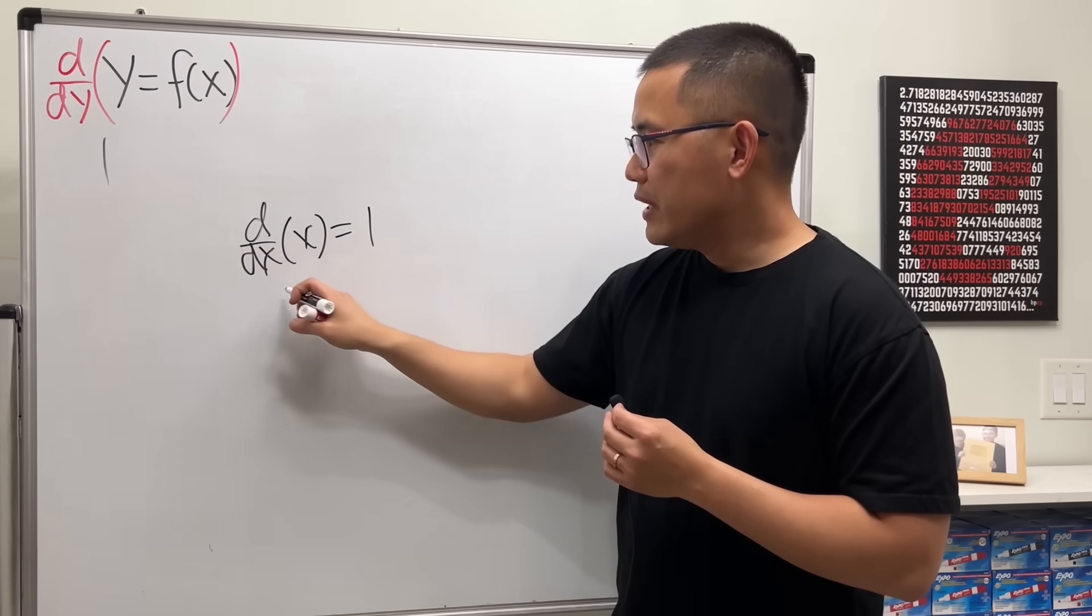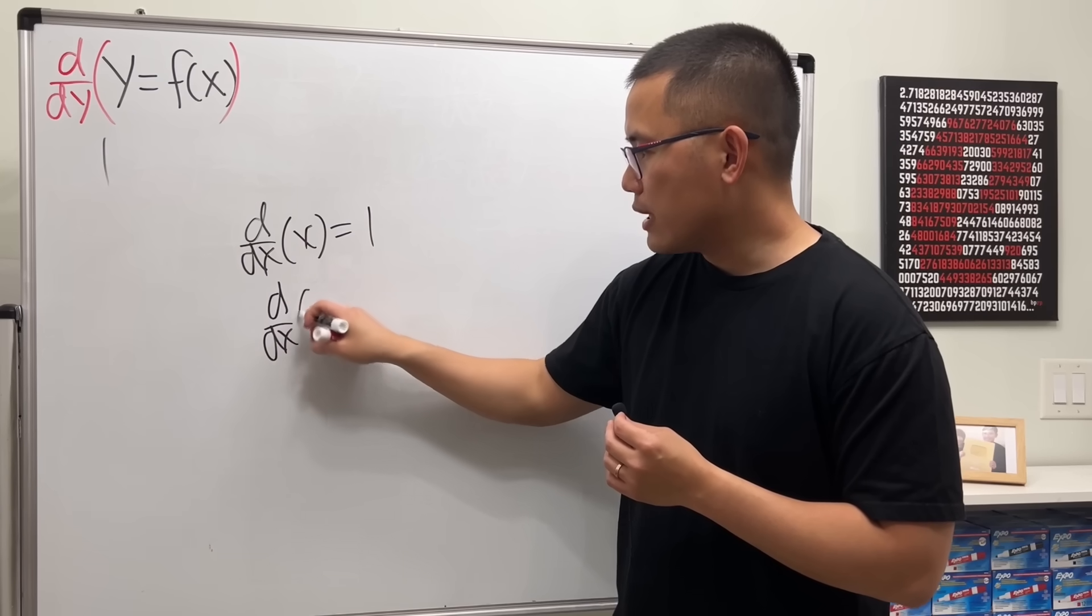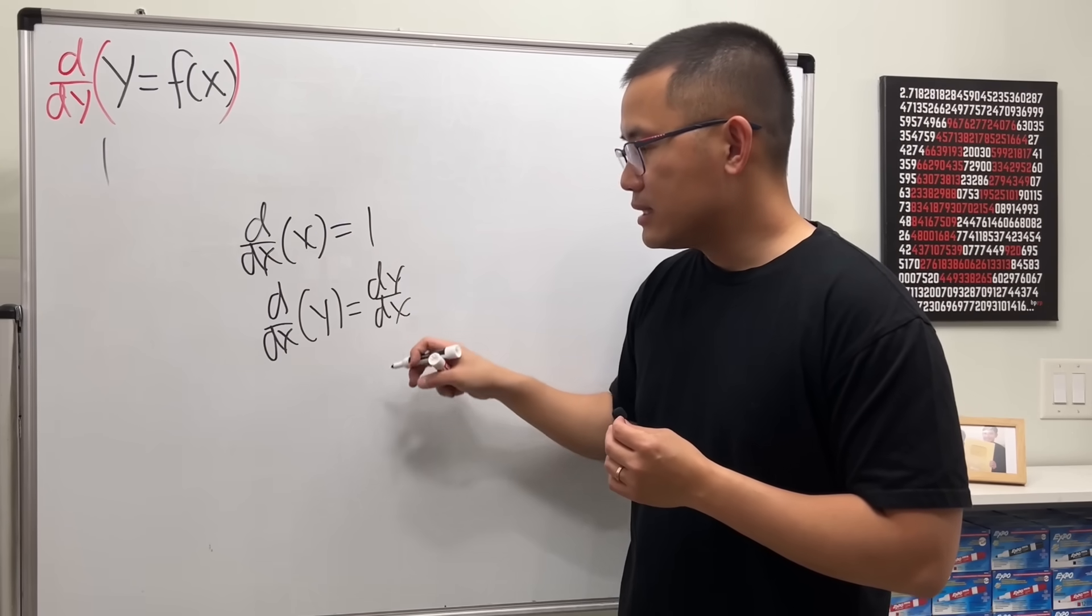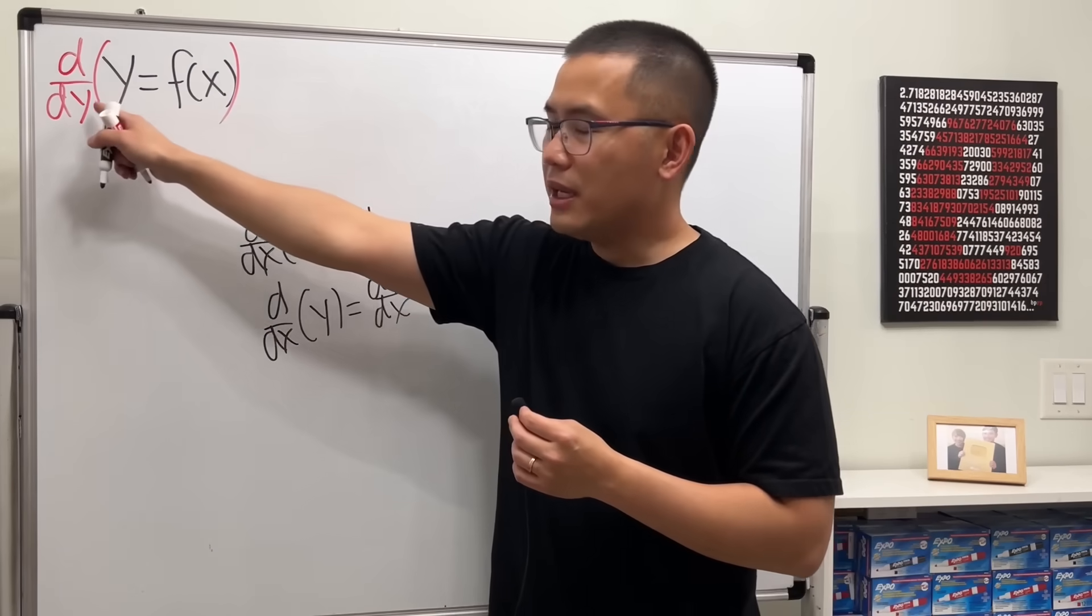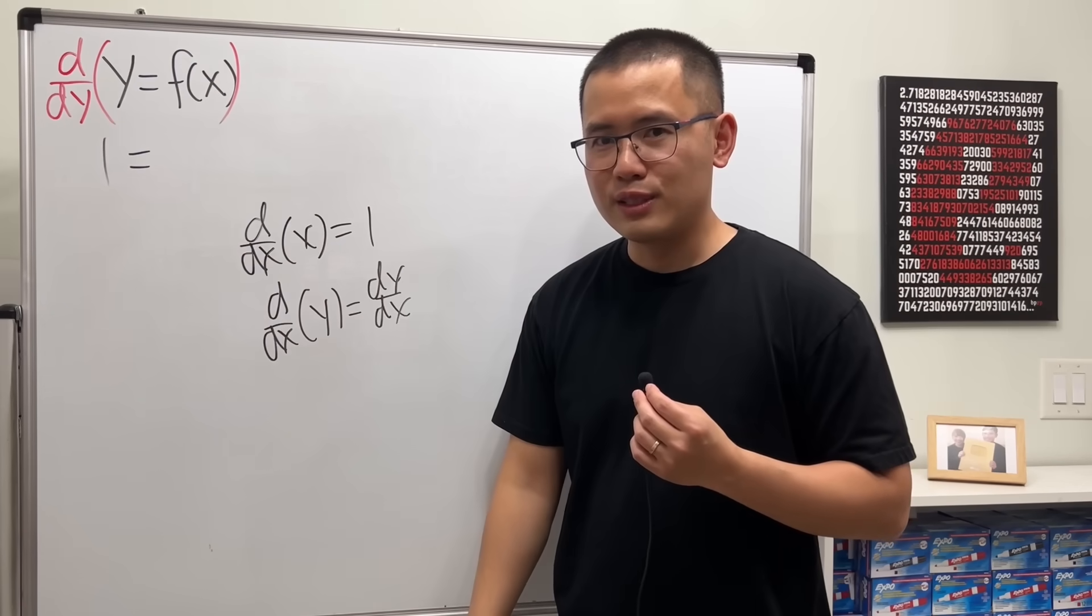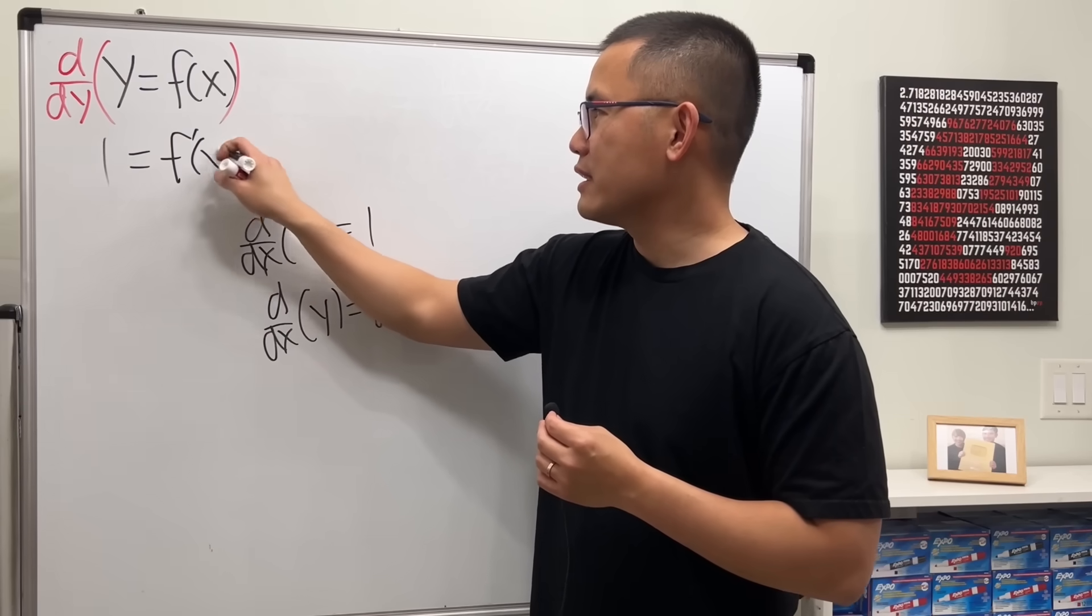If you differentiate with respect to x of y, this right here is equal to dy/dx. Keep that in mind. So the left-hand side is equal to one, and the right-hand side, what's the derivative of f of x? Don't think too hard, it's just f prime of x.